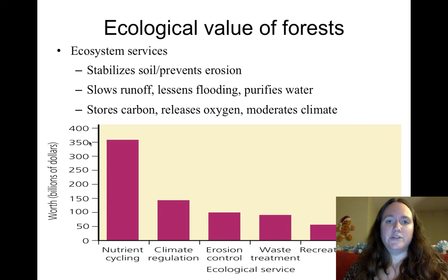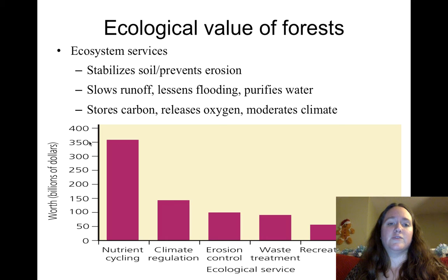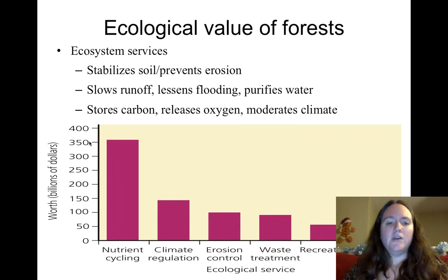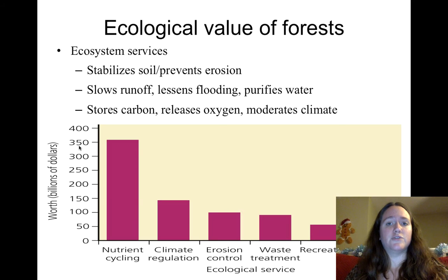You need to be able to talk about the ecological value of trees — this is the biggest topic in environmental science regarding trees. Trees stabilize the soil, prevent erosion, slow runoff, lessen flooding, and purify water. They are also a huge storage of carbon, make oxygen, and moderate the climate. A graph shows ecosystem services and their monetary value — for example, nutrient recycling by trees would cost us $350 billion if we had to do it ourselves.